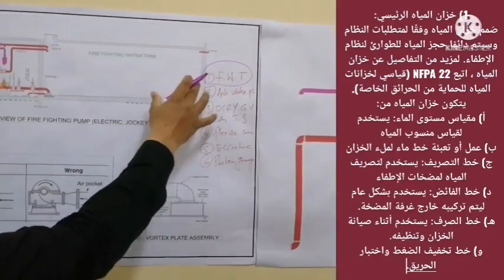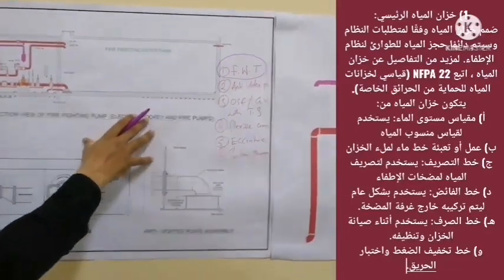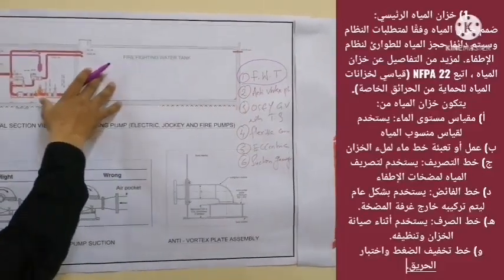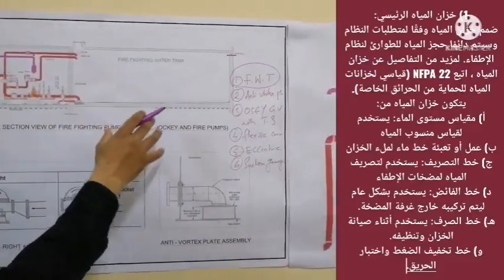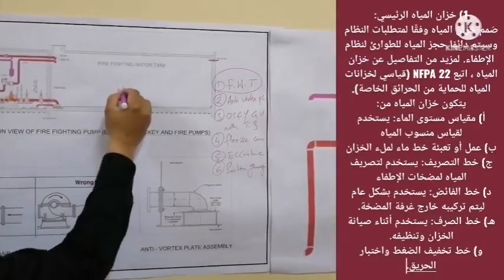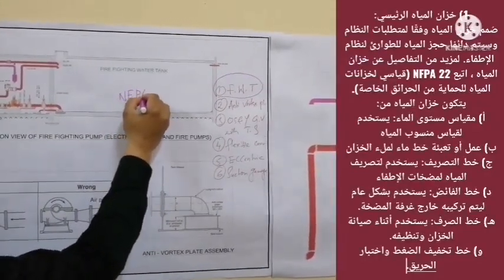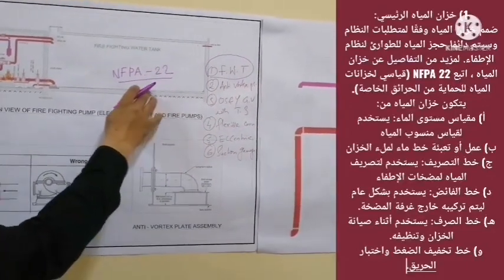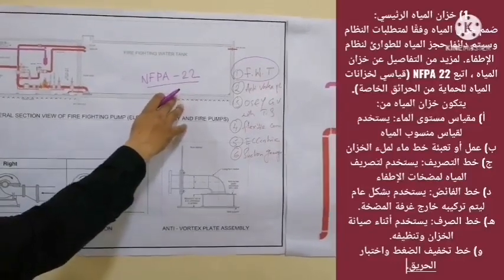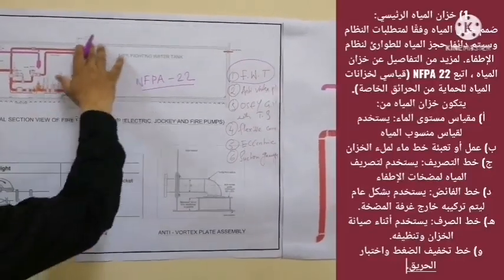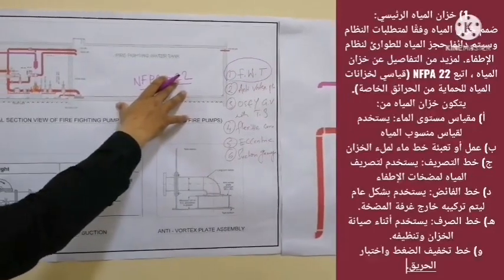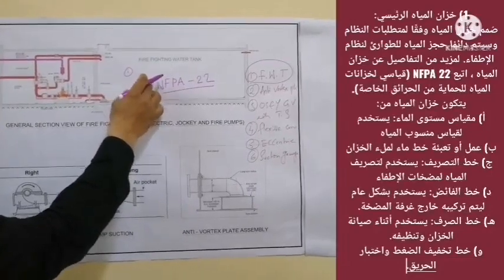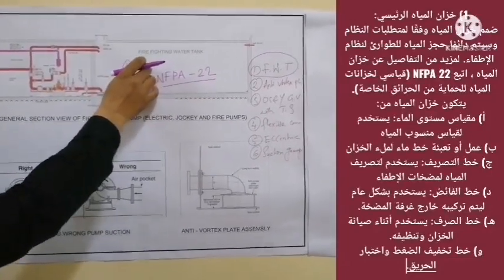Let's start the discussion with the main firefighting water tank. The water tank is designed as per system requirement and water is always reserved for the system for emergency use. For more detail on water tanks, follow NFPA 22 — the standard for water tanks for private fire protection. Let's discuss what the water tank actually consists of. Number one, you can have a water level gauge, which is used for measuring the water level.